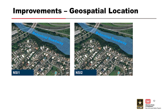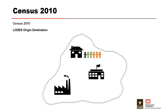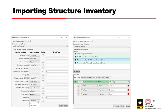This is an example of improvements in a geospatial location. Population data sources include the following. This is an example of Census 2010. These examples show importing structure inventory.